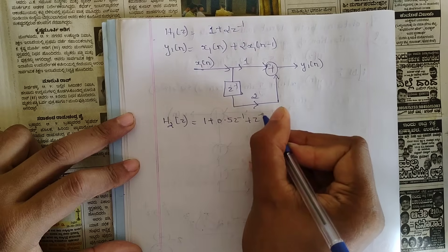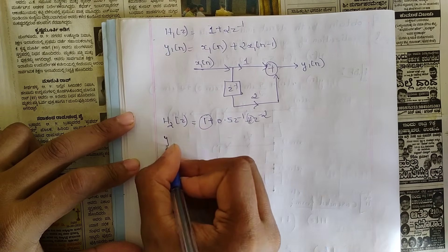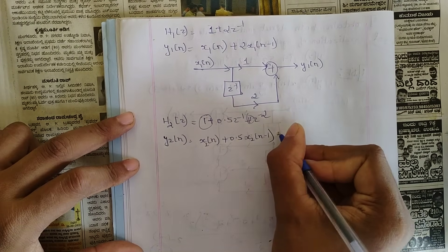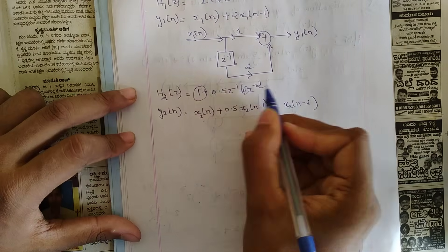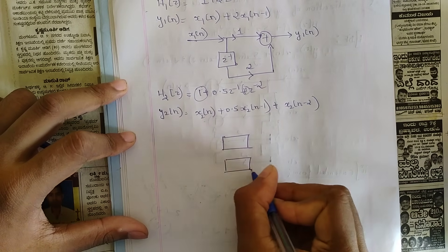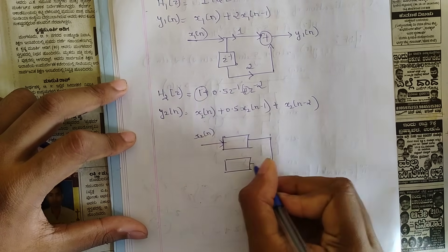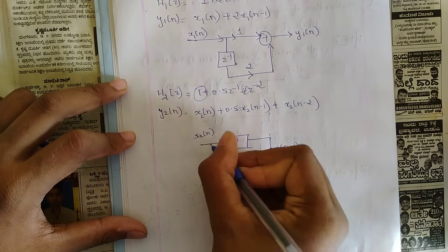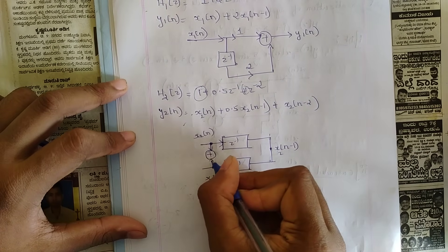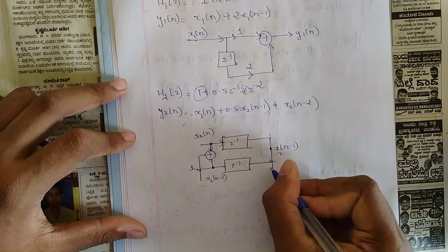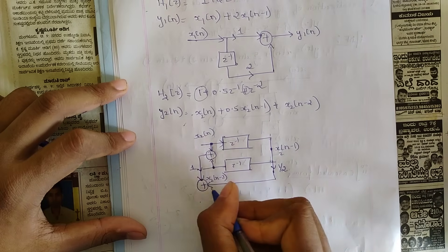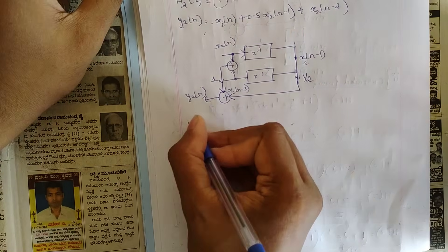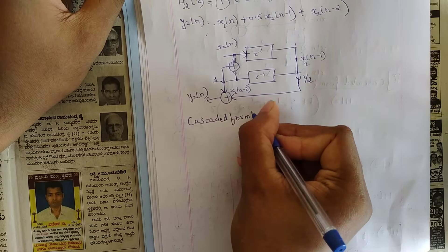For H2(z) = 1 + 0.5z⁻¹ + z⁻²: the first and last coefficients are both 1, so this is in linear phase. Write y2(n) = x2(n) + 0.5·x2(n−1) + x2(n−2). Draw the linear phase structure with two delays. The common coefficient is 1; add those together first, then include the 0.5 coefficient in a summer to produce output y2(n).